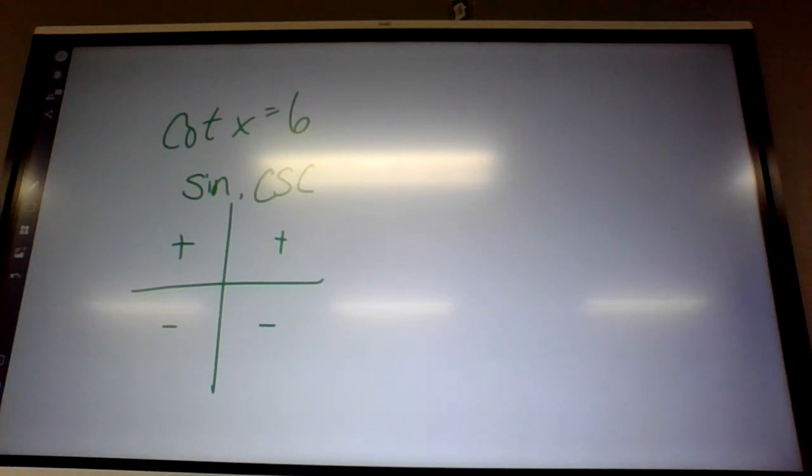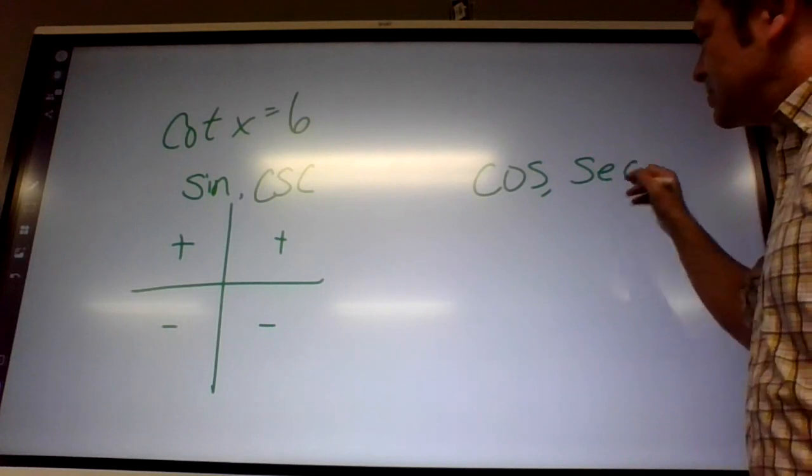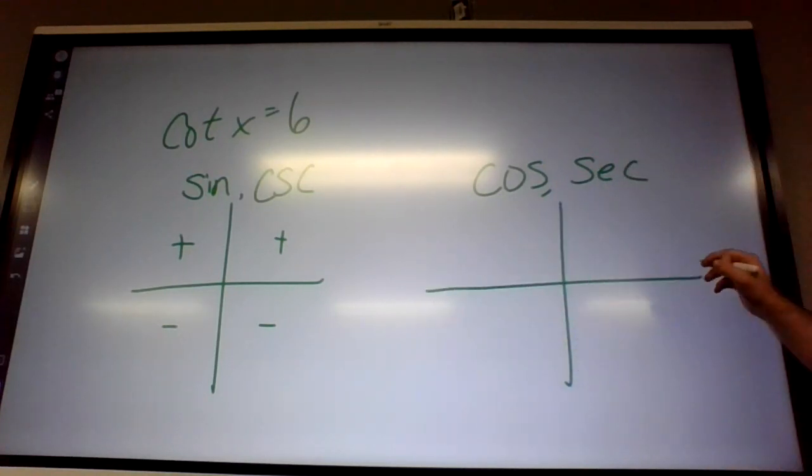Cosine and the reciprocal function is secant. Where are they positive? Right.